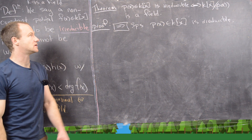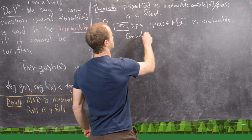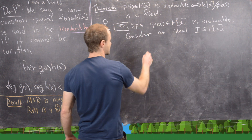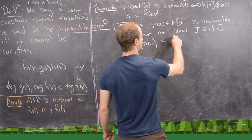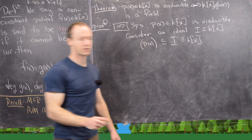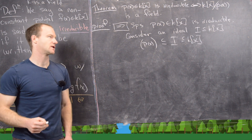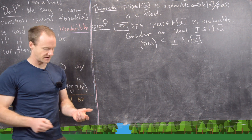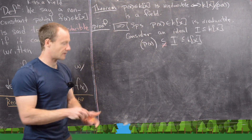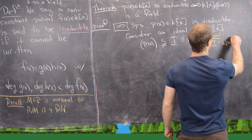We want to consider an ideal between the one generated by p(x) and the whole ring. Let's consider an ideal I of the polynomial ring k[x] where this ideal is between our principal ideal generated by the polynomial and the full ring. To show this ideal is maximal, we need to show that it is either this principal ideal or the whole ring. We'll show it's the whole ring. Suppose it's not equal to the principal ideal generated by p(x), which means our goal is to show that I equals the whole polynomial ring k[x].